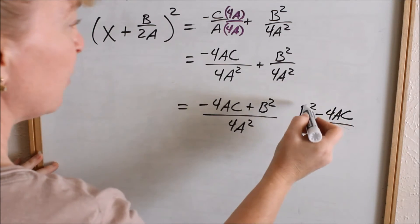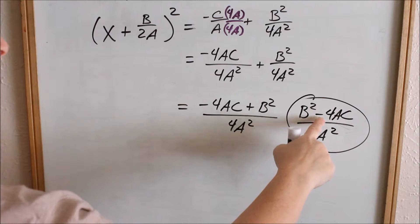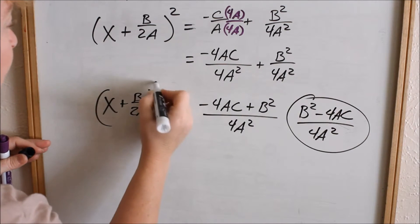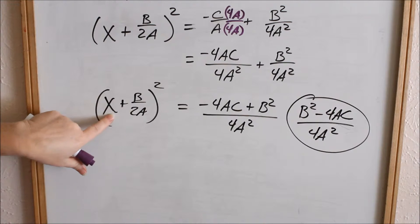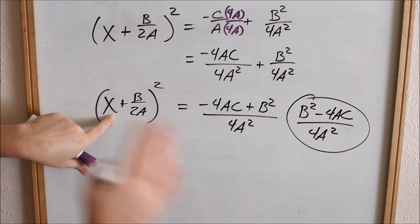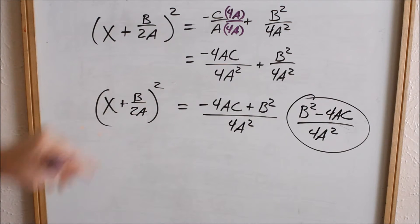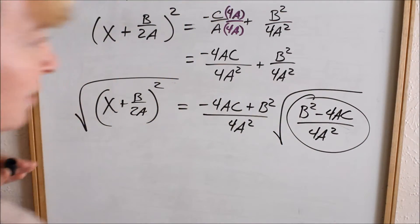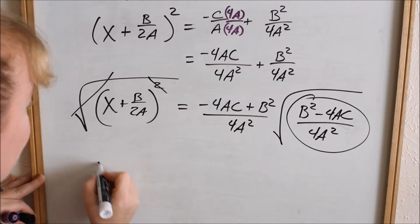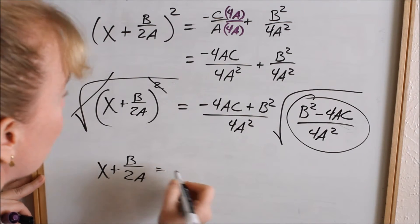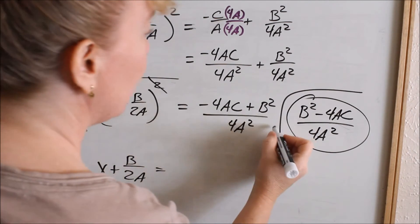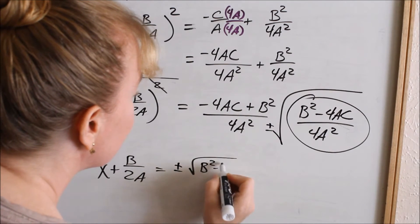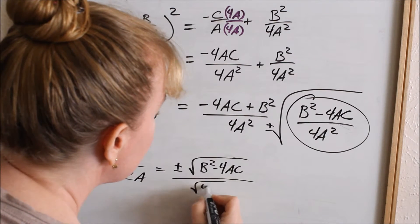So we are going to use this form of the right side, and you can start seeing how it's looking more like the quadratic formula. On the left, we have x plus b over 2a, all squared. The goal is to get x all by itself — we are solving for x. So we need to get rid of our square by taking the square root of both sides. That means we take the square root of both sides, so the square cancels on the left, giving us x plus b over 2a equals. When we take the square root, we put a plus or minus in front, and when we do the square root of a fraction, you do the square root of the numerator and the square root of the denominator.